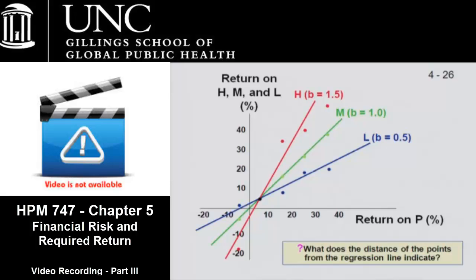If you expect the stock market to go up 10% next year, then you might expect Amgen to go up 15% because it's more volatile. When you plot returns over time, the market may go like this, and Amgen goes like this. Generally speaking, in life sciences you would expect to have higher rates of return. What does the 0.5 mean for L? That L will have half the volatility of the market. Right, exactly.